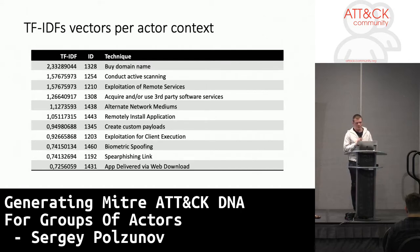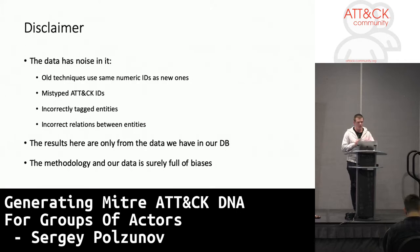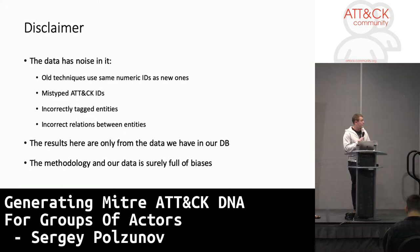We calculate TF-IDF per context and get a vector where for every technique we get a number — term frequency inverse document frequency. We can calculate a top 10 or top 20 techniques per context, per actor. Before I go into that, a disclaimer: the data is super noisy because humans were typing MITRE ATT&CK IDs, providers mislabeled entities, the data model is not perfect, the database is not perfect, and our database does not have full coverage. So take it with a grain of salt. And of course, there are a ton of biases in the method and in the data.